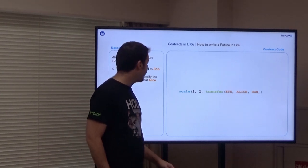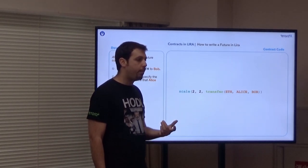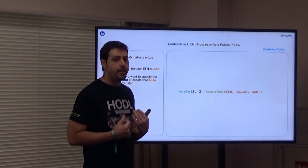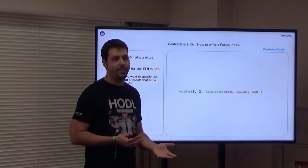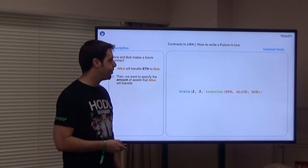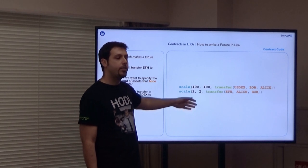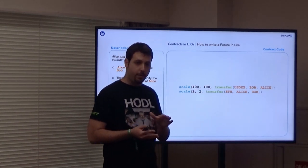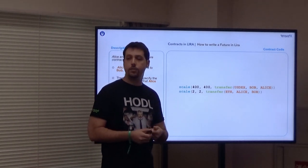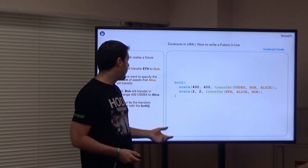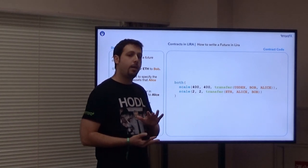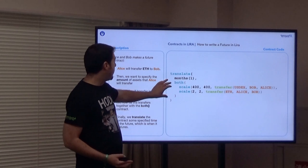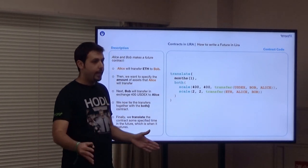The second parameter for 'scale' refers to how much money you want to ask the custodian to hold from it. In this example, we'll mostly use 100% custodian. The second part makes a transfer from Bob to Alice in USDX. These two are separate contracts. 'Both' allows us to take both of them and make the transfer atomic. Then we put a one-month execution time using 'translate', and we finish the contract.